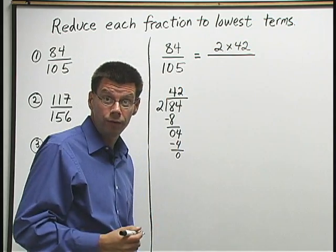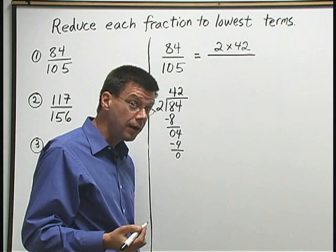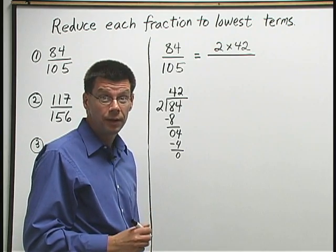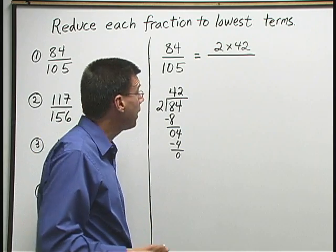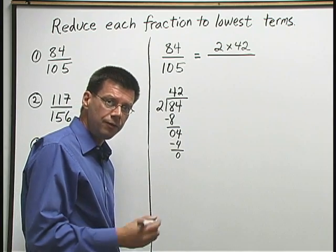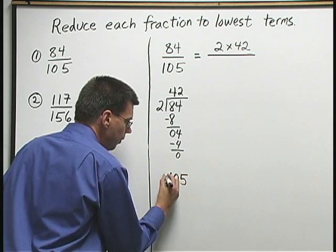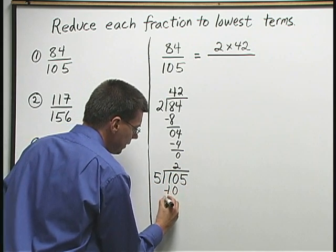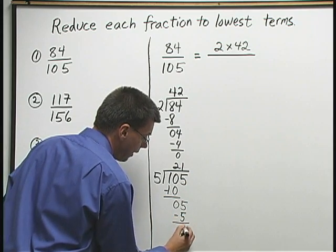Now I want to think about breaking down the 105 down below. I know 2 won't go into 105 because 105 isn't even. But I know another number that will go into 105. Because I have a 5 in the ones place, I know 5 goes into 105. Let's go ahead and divide 105 by 5. 5 goes into 10 twice. 2 times 5 is 10. Subtract, we get 0. Bring down the 5. 5 goes into 5 once. 1 times 5 is 5. Subtract, we get 0.